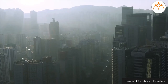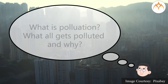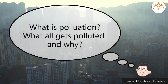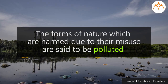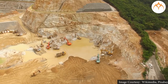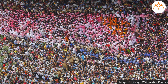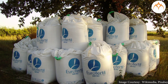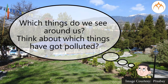Student friends, we always hear the word pollution every day in our day-to-day life. So what is pollution, what all gets polluted, and why? The forms of nature which are harmed due to their misuse are said to be polluted. Man brings about changes in nature, and the impact is visible due to the increase in vehicles, increasing population, widespread use of insecticides and fertilizers, and wrong farming methods, which have polluted air, water and land.